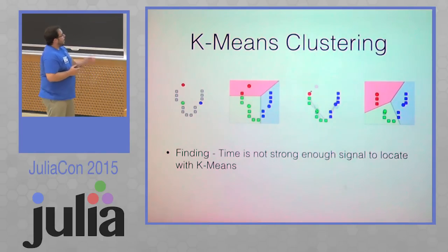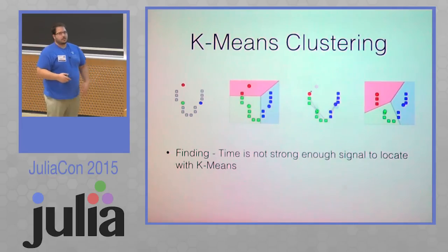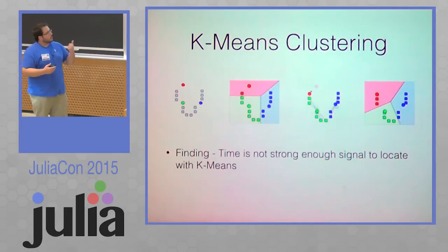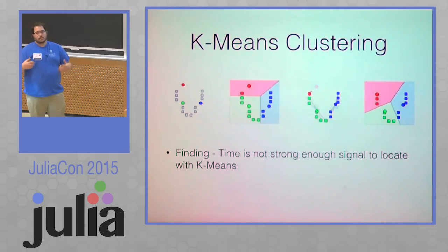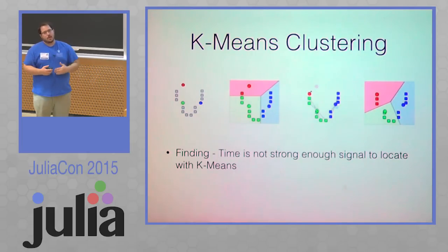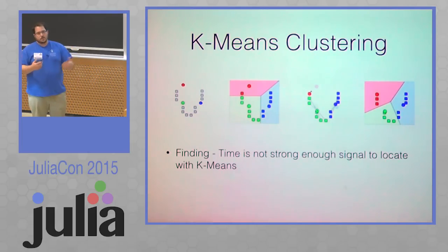What we found was that time signal is not a strong enough indicator to actually get K-means to work without a lot of preprocessing. What we found was language was the dominant signal, and then after language you have author, and then genre, and stuff like those.